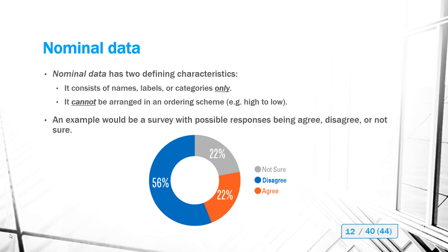An example of nominal data is a survey with responses of 'agree,' 'disagree,' or 'not sure.' These are categories with no counts or measurements. They can't be arranged in any definitive ordering scheme — you could order them 'agree, disagree, not sure' or 'disagree, agree, not sure' and no arrangement is more correct than another. Therefore, this is nominal data.